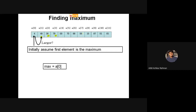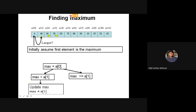Do we update max or do we leave it as it is? We check: if the second student's mark is greater than max, we update max to a[1]. We apply the same logic to the third student's mark. If the current element is smaller than max, then we don't need to do anything — we just skip it and move on to the fourth, fifth, and so on.